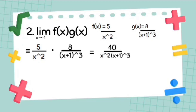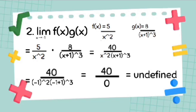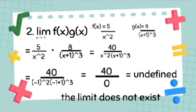Now let's substitute negative 1 into x. This becomes 40 over negative 1 squared times negative 1 plus 1 cubed, which results in 40 over 0. We know that if the denominator of a fraction is 0, in the context of limits, it results in undefined — the limit does not exist.